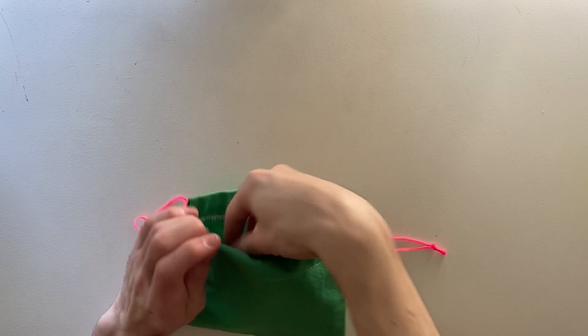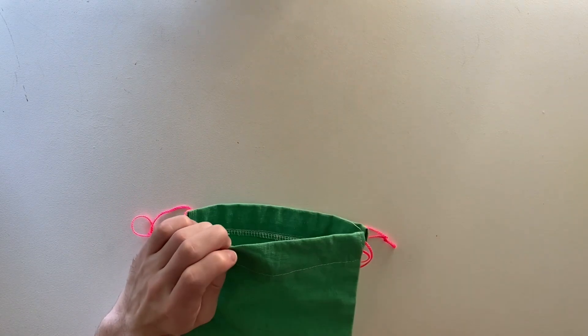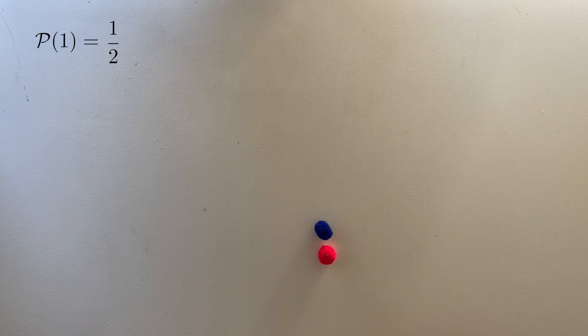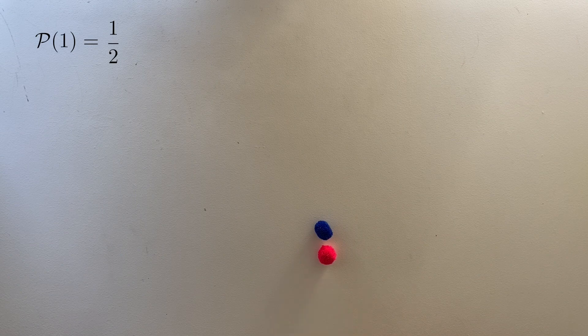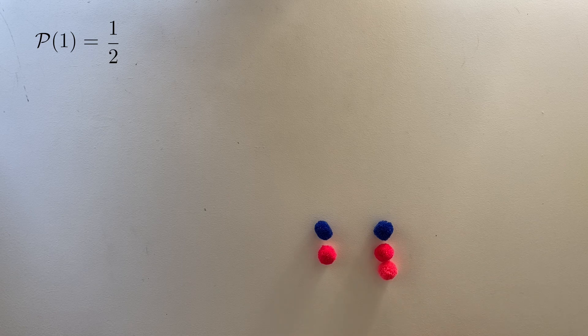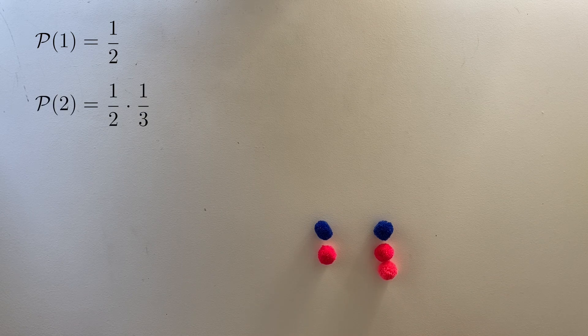Okay, so now let's go back to the game at the start of the video. At the end of every round, we add another red ball to the bag. The probability of getting the blue ball on round one is still one-half. In order to get the blue ball on round two, though, we need to get the red ball on round one, and the blue ball on round two. But remember that on round two, there are three balls in the bag. So that's a half times a third.